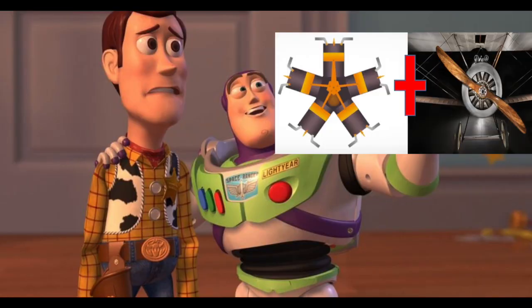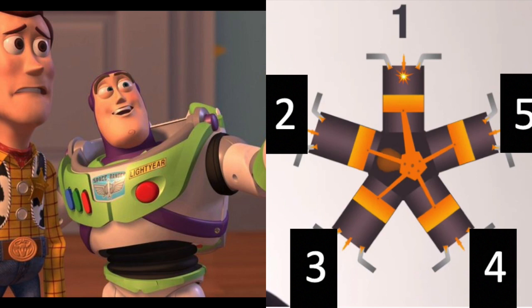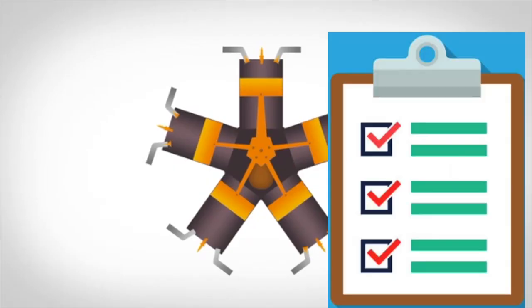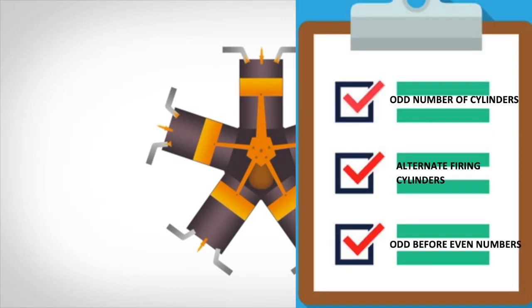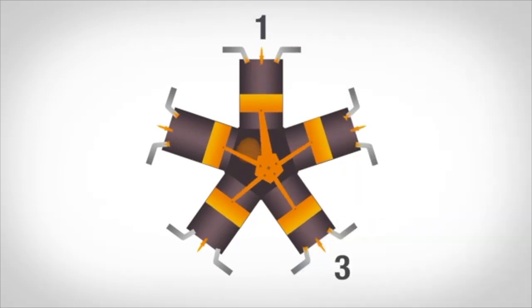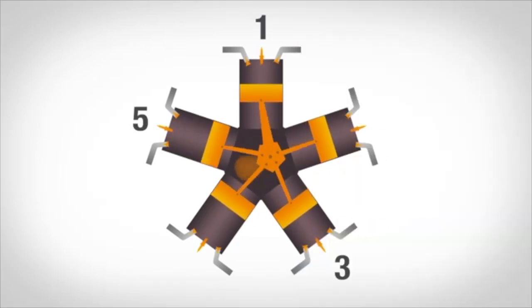Looking from the front or propeller side, you start from the top and go counterclockwise: one, two, three, four, five. A radial engine follows a specific firing order — it fires alternate cylinders. A radial engine always has an odd number of cylinders because of the firing order; it skips every other cylinder, firing all the odd ones first, then all the even ones. The firing order would be: one, three, five, two, four.